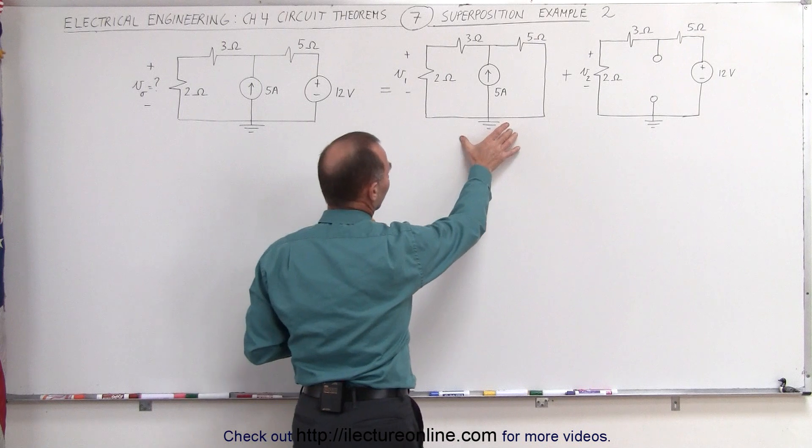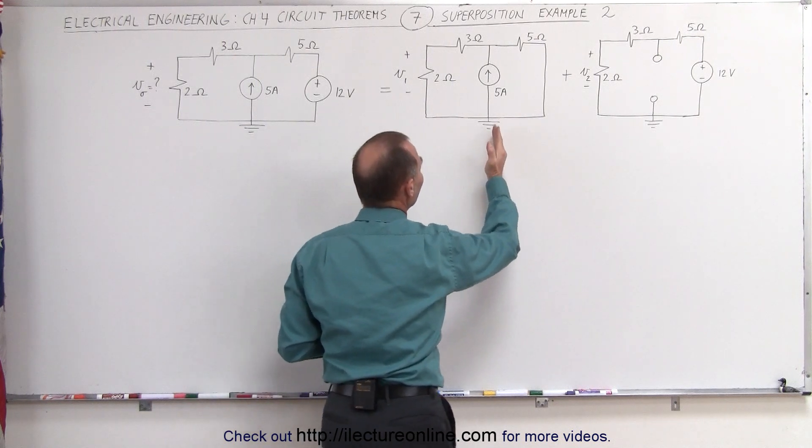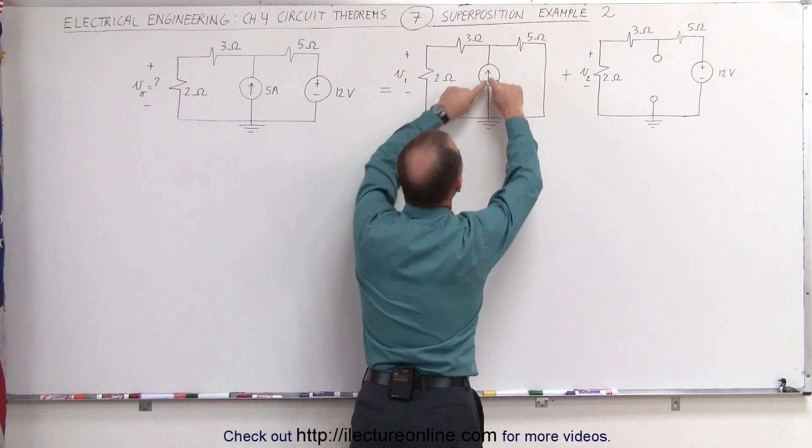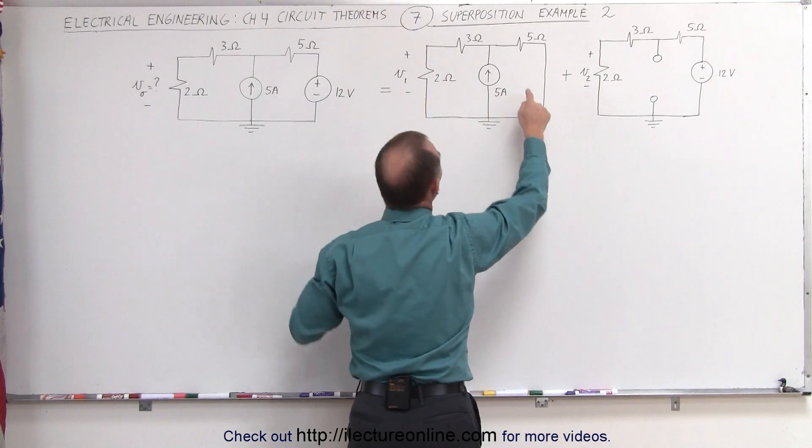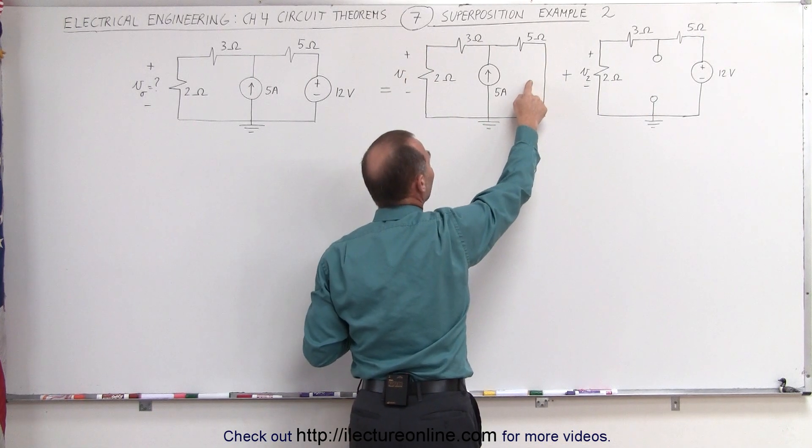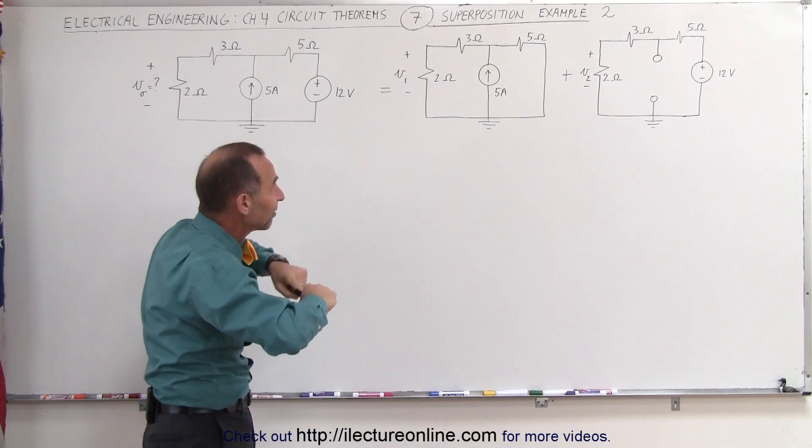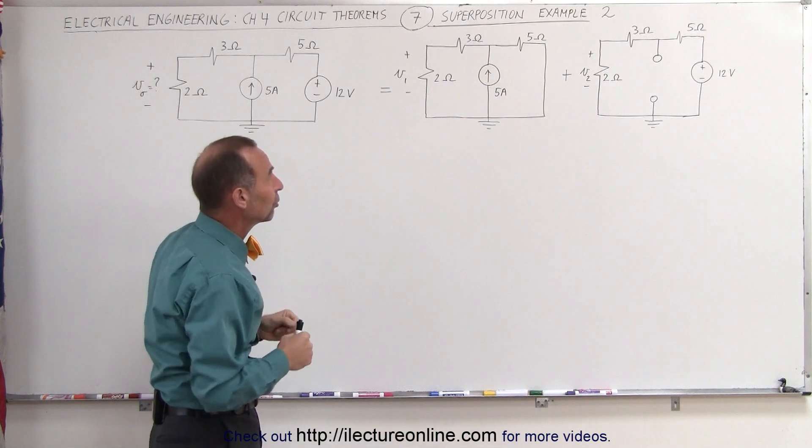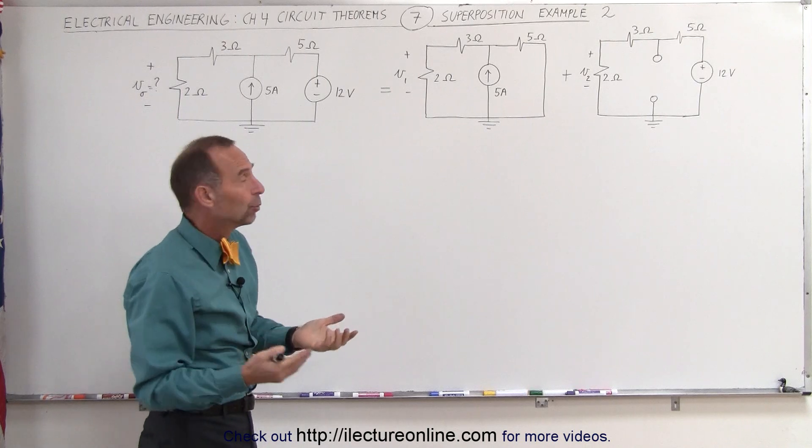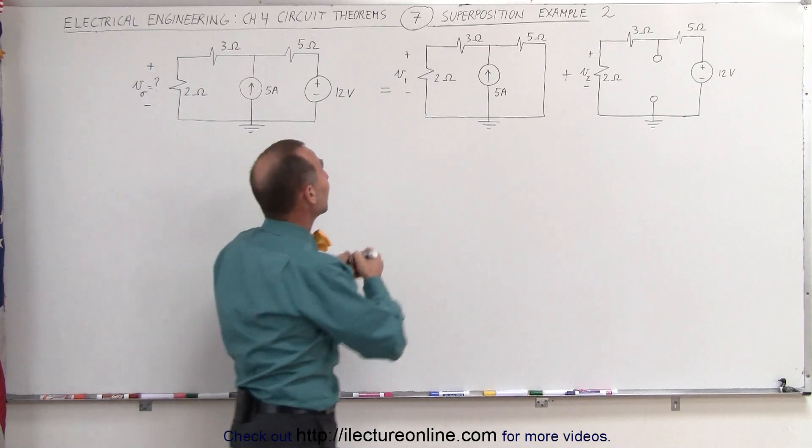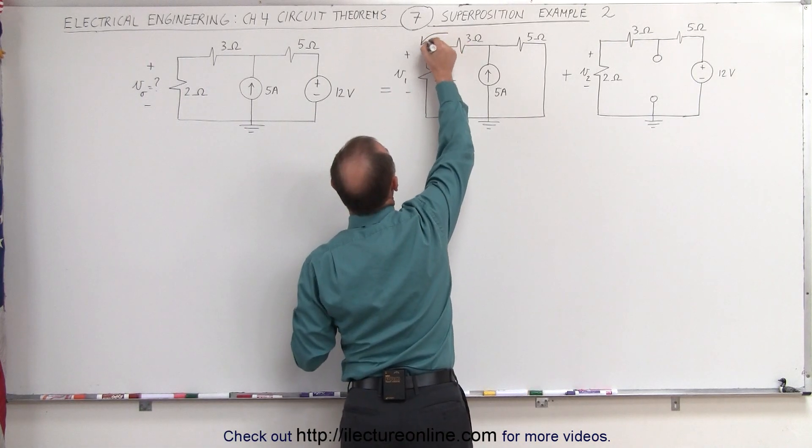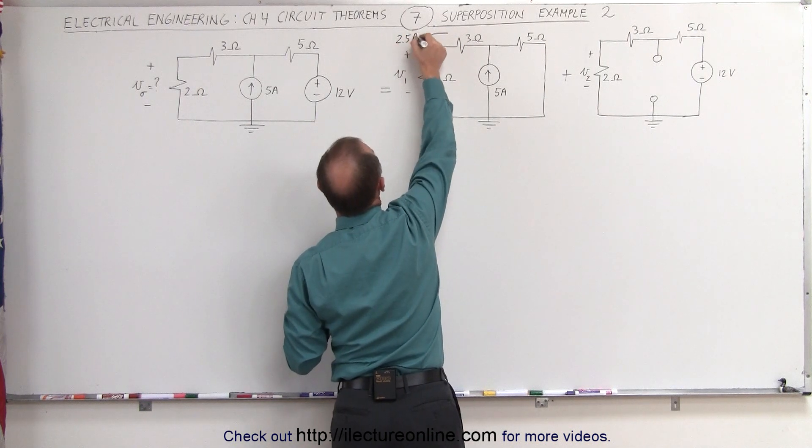Starting with the first circuit here, we realize we have a 5 amp current that will then split up between the two branches. Notice that the right branch has a total resistance of 5 ohms and the left branch has a total resistance of 5 ohms, which means the same amount of current will go through each of the two branches. Half will go to each branch. That means 2.5 amps will go to this branch and 2.5 amps will go to the other side.